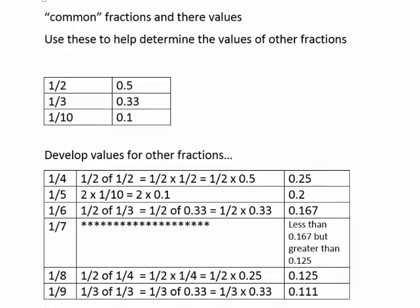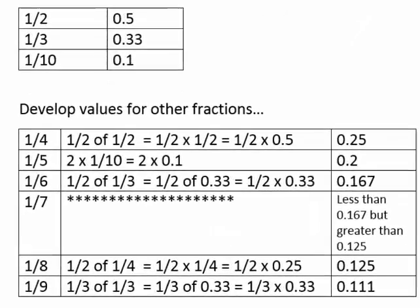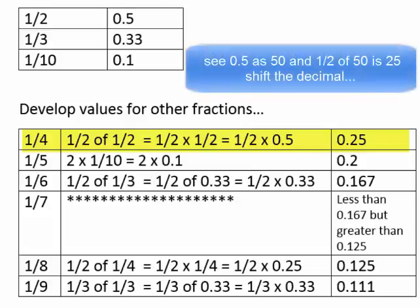So, for example, we could develop the fractional values for 1/4, 1/5, 1/6, 1/8, and 1/9, and estimate the value of 1/7. So, 1/4 can be interpreted as 1/2 of 1/2. So, 1/2 times 1/2, which is 1/2 times 0.5. And if you take 1/2 of 0.5, you'll get 0.25. For a moment, you can imagine that the fractional value 0.5 is like 50. And if you divide 50 in half, or take 1/2 of 50, it's 25. Shift the decimal and you'll get 0.25. 1/5, though, is really twice 1/10. You'll get 0.2.